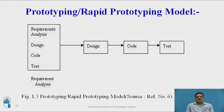The prototyping model begins with outline requirements. For those outline requirements, informal design is done, informal coding is done, and informal testing is done. Once the first prototype is ready, it is exposed to the user. Customers play with it and give feedback on what should be there, what should not be there, and what additional features should be added. That feedback is considered as input to the next prototype. Again, analysis, informal design, coding, and testing are done, and the next prototype is exposed to users. This continues until the last prototype satisfies most of the customer's requirements.